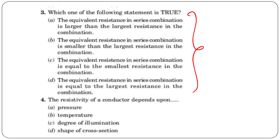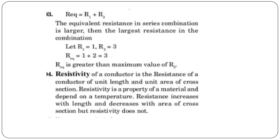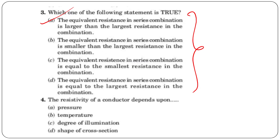The equivalent resistance in series combination is larger than the largest resistance in the combination. For example, if R1 is 1 ohm and R2 is 2 ohms, then R equivalent equals 1 plus 2 equals 3 ohms. So R equivalent is greater than the maximum individual value R2 = 2 ohms. Therefore, equivalent resistance in series is always larger than the largest resistance in the combination.